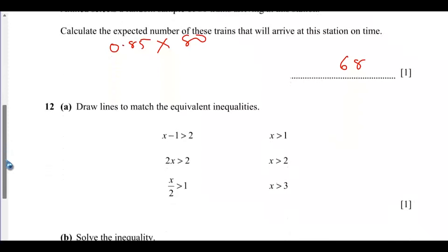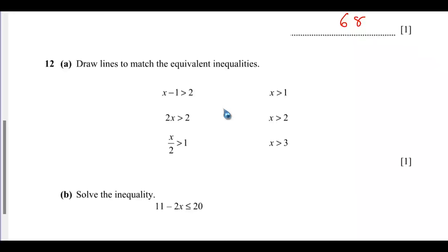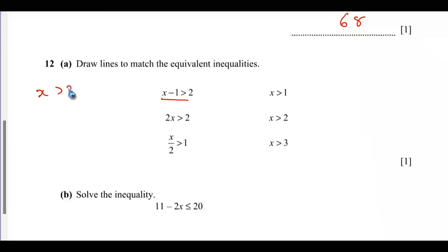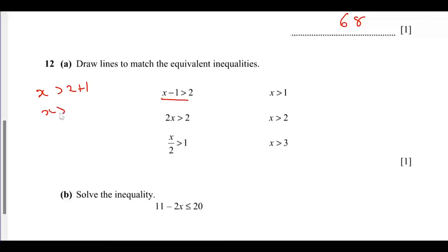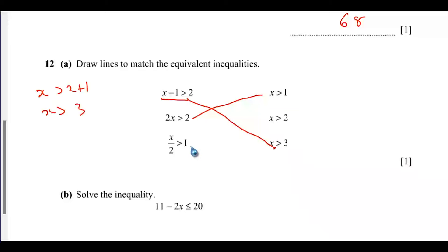Question 12A: Draw lines to match the equivalent inequalities. x − 1 > 2 connects to x > 3, since x > 2 + 1 = 3. And 2x > 2 connects to x > 1, since dividing both sides by 2 leaves x > 1. Just connect the matching pairs.